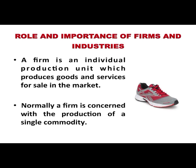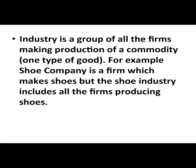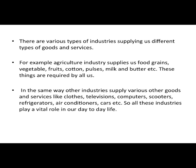Let us now understand the role and importance of firms and industries in production. A firm is an individual production unit which produces goods and services for sale in the market. Normally a firm is concerned with the production of a single commodity. An industry, on the other hand, is a group of all the firms producing one type of good. For example, a shoe company is a firm which makes shoes, but the shoe industry includes all the firms producing shoes. There are various types of industries supplying us different types of goods and services, such as the agriculture industry which supplies food grains, vegetables, fruits, etc. Firms and industries have great importance in our daily life.